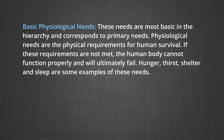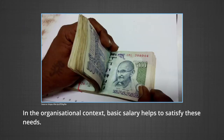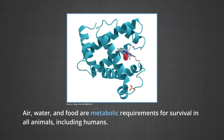First, basic physiological needs. These needs are the most basic in the hierarchy and correspond to primary needs. Physiological needs are the physical requirements for human survival. If these requirements are not met, the human body cannot function properly and will ultimately fail. Physiological needs are thought to be the most important and should be met first. Hunger, thirst, shelter and sleep are some examples. In the organizational context, basic salary helps to satisfy these needs. Air, water and food are metabolic requirements for survival in all animals, including humans.